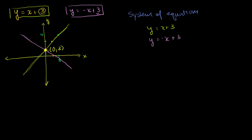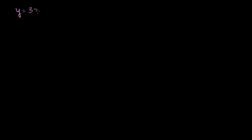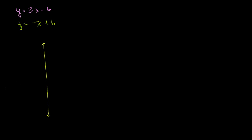Let's do another one. Let's say we have y is equal to 3x minus 6 as one equation, and the other equation is y is equal to negative x plus 6. Just like before, let's graph both of these as precisely as I can.